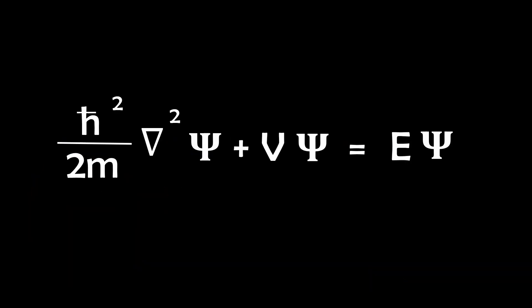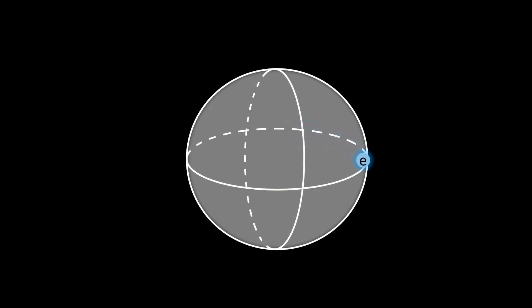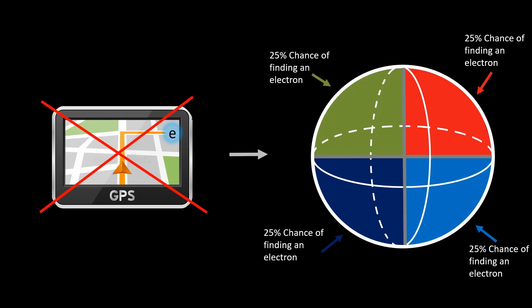Now let's decode this equation focusing on the time-independent form. It introduces us to this trident-looking thing called psi, which is the wave function. It tells us where the electron is in a given volume of space. But it isn't a precise GPS for locating electrons. Instead, it's more like a probability guide suggesting where electrons are likely to be found.